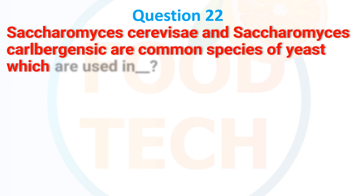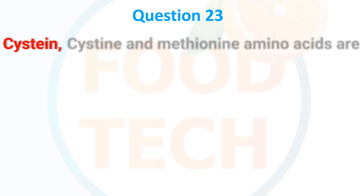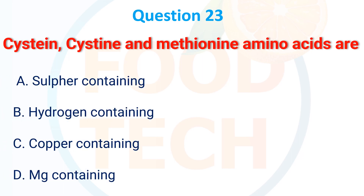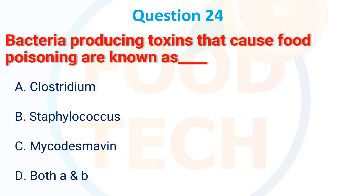Saccharomyces cerevisiae and Saccharomyces carlsbergensis are common species of yeast used in: A. Acidic fermentation, B. Alcoholic fermentation, C. Lactic fermentation, D. All of the above. The correct answer is alcoholic fermentation. Cysteine and methionine amino acids are: A. Sulfur-containing, B. Hydrogen-containing, C. Copper-containing, D. Mg-containing. The correct answer is sulfur-containing. The bacteria producing toxins that cause food poisoning are known as: A. Clostridium, B. Staphylococcus, C. Both A and B. The correct answer is both A and B.